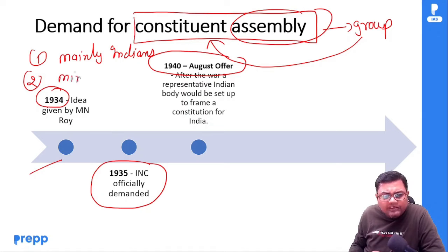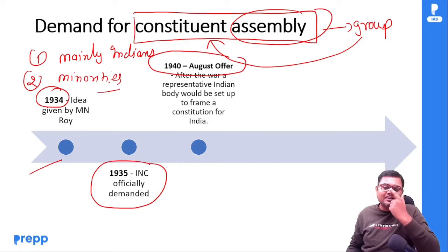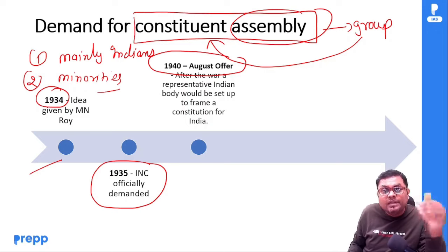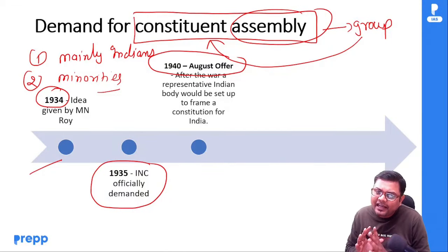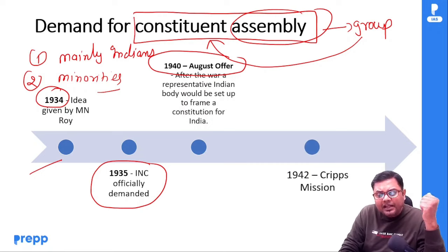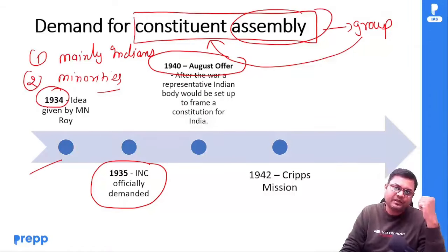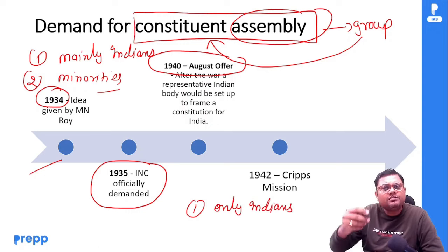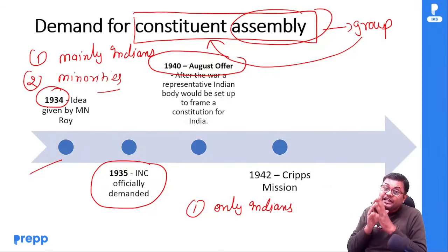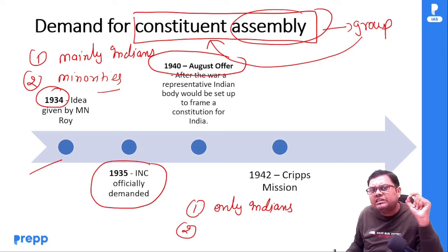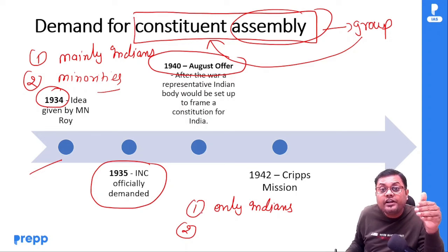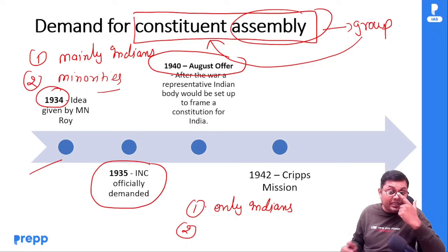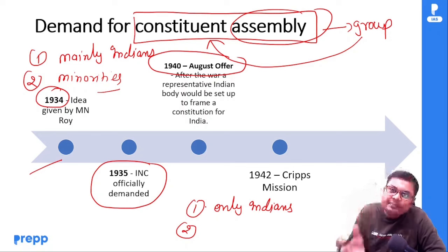Assembly में mainly Indians होंगे और minorities के पास veto power होगी। लेकिन Indians चाहते थे कि सारे members only Indian ही होने चाहिए, not mainly। तो इस offer को reject कर दिया गया। फिर 1942 में Cripps Mission आया। इसमें कहा गया कि only Indians will be there — एक कदम आगे बड़े। But इसमें यह भी था कि any province not willing to join India वो अपना separate constitution बना सकती है, separate union बना सकती है। तो यह partition की बात थी, इसको भी accept नहीं किया गया।